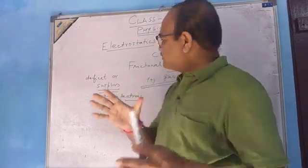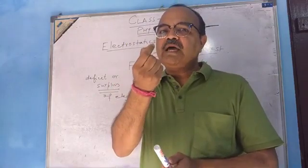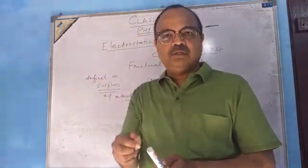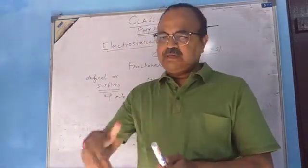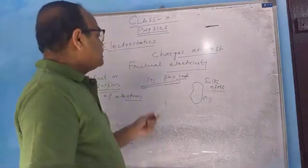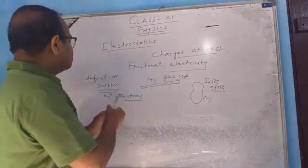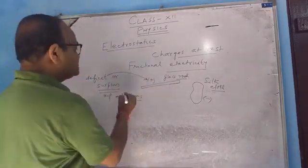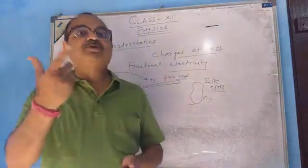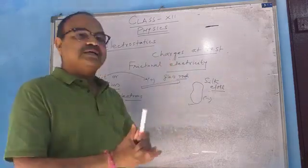Any substance is made up of atoms — the atom is the smallest unit of matter. In the atom there is a nucleus. Protons are inside the nucleus and cannot come out. Electrons are in the outer orbits, and the outermost orbit is very loosely held. Due to friction, electrons from the glass rod are transferred to the silk cloth. This is why in the glass rod there is a deficit of electrons — so it becomes positively charged — and in the silk cloth there is a surplus of electrons, so it becomes negatively charged.